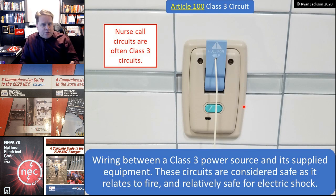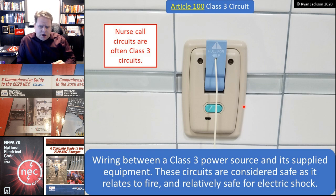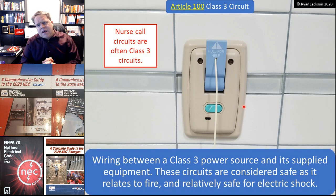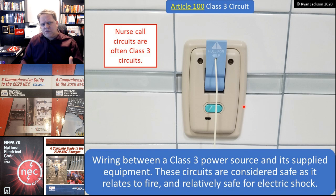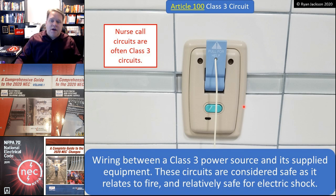Similarly, a class 3 circuit is the wiring between a class 3 power source and its supplied equipment. These circuits are considered safe as it relates to fire, and safe enough as it relates to electric shock. We can get higher voltages with class 3 circuits, so we don't have quite the same shock safety as class 2. However, by limiting voltage and current, a class 3 circuit is considered safe from fire and safe enough from shock. A common example of a class 3 circuit would be a nurse call system, though most limited-energy circuits are typically class 2.